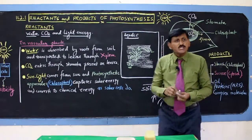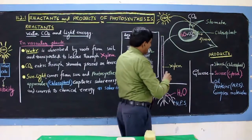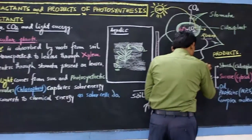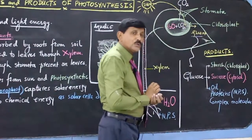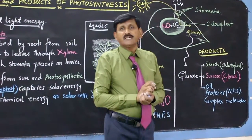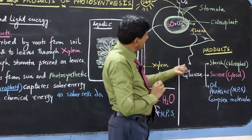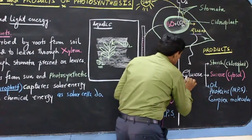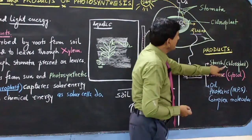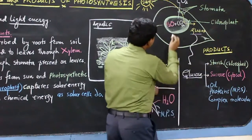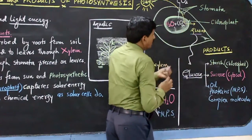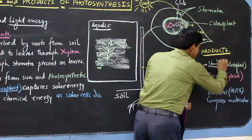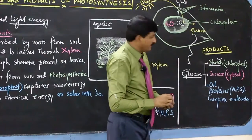Glucose is the product of photosynthesis — it is the starting material. Then, glucose ke kuch molecules agar chloroplast mein hain, to chloroplast mein yahan par glucose ke molecules banaenge starch.